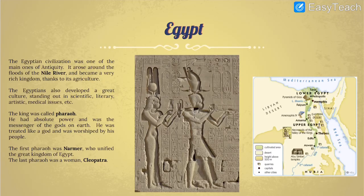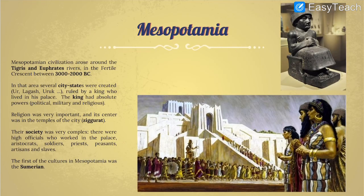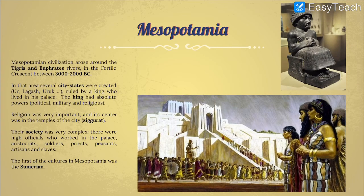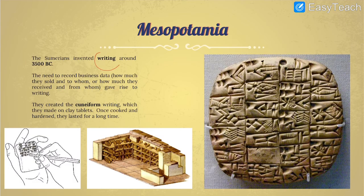Hello guys. I'm going to continue with unit number five about the first civilizations. In the last video we were talking about Mesopotamia, this area around the Tigris and Euphrates rivers. We were talking about the origins of writing, which is something really important, and the first libraries.